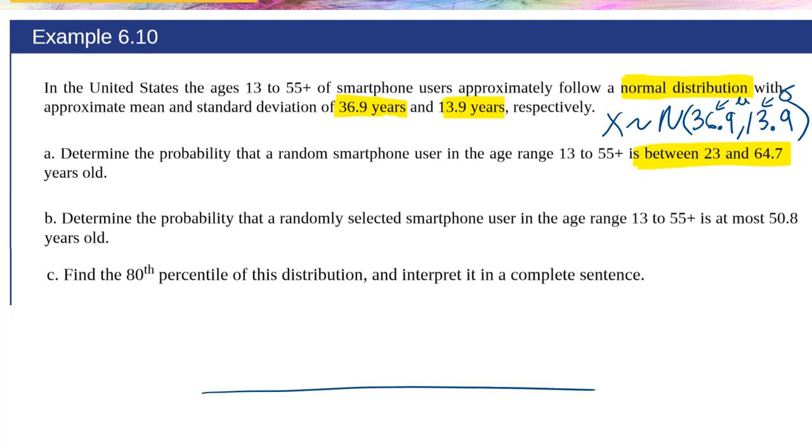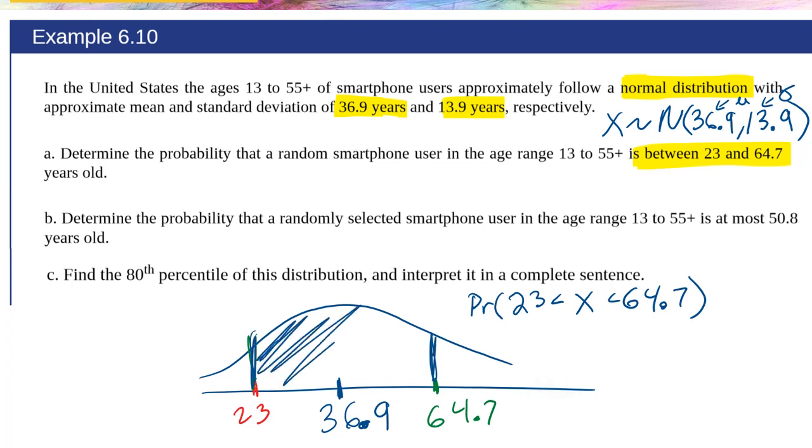Let's draw out the normal distribution first. In the center of this normal distribution is always the mean. The mean here is 36.9. And what we're trying to find out is what's the probability that X is between 23 and 64.7. So 23, it's some number less than 36, so it's down here. And 64, it's greater than 36, so it's somewhere up here. This is not drawn to scale, but it's just approximate. And what we want to know is basically we want to know this area between, right? The probability that X is between 23 and 64.7.